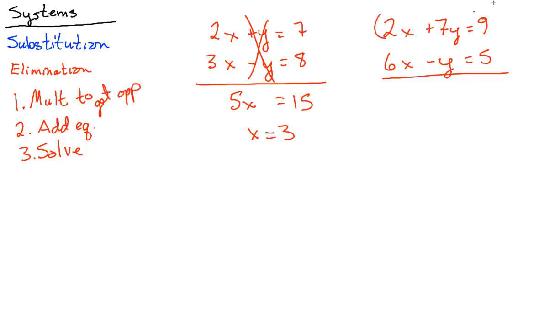So in this case, we have an equation. We can multiply anything we want on both sides. So if we multiply by negative 3, this actually becomes negative 6x minus 21y equals negative 27. Add those and elimination has occurred. So this opposite is what is a trigger to elimination.